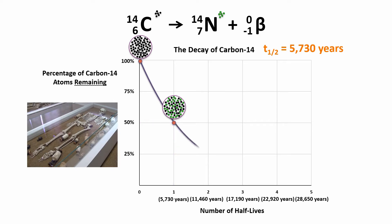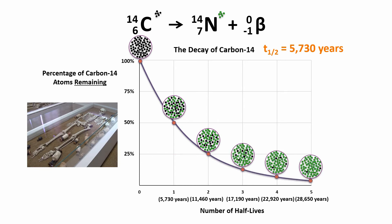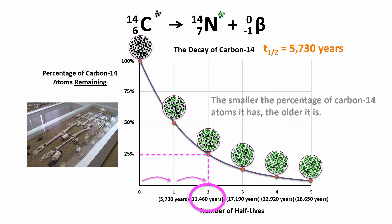After two half-lives it'll only have one quarter as many, then an eighth, a sixteenth, and so on. So if the bone is found to have only half as many carbon-14 atoms as a bone of a living person normally has — about one in a trillion carbon atoms — the preserved bone must be about 5,730 years old. If it only has a quarter of the carbon-14 atoms, then the bone must be 11,460 years old, since two half-lives have passed. The smaller the percentage of carbon-14 atoms it has, the older it is.